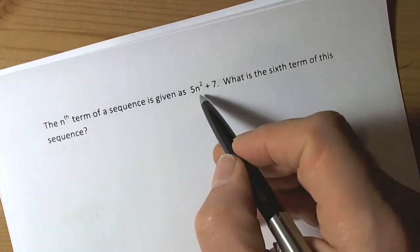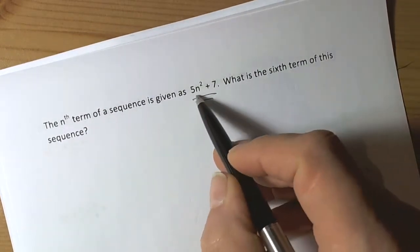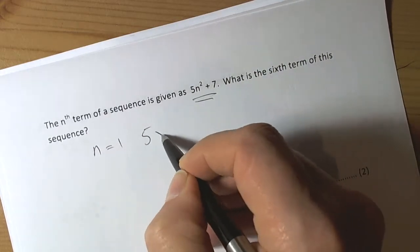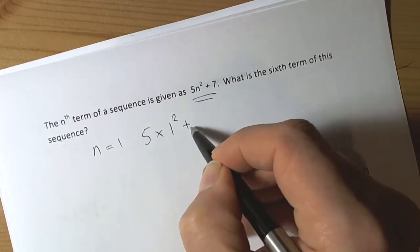When you're given an nth term rule for a sequence, that tells you that when n is 1 for the first term of the sequence, you're going to be doing 5 times 1 squared plus 7.